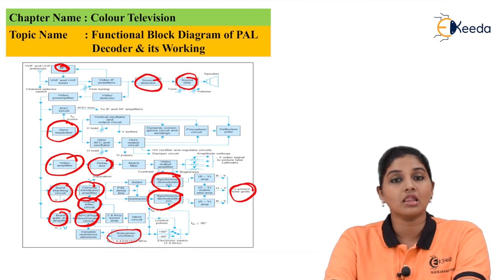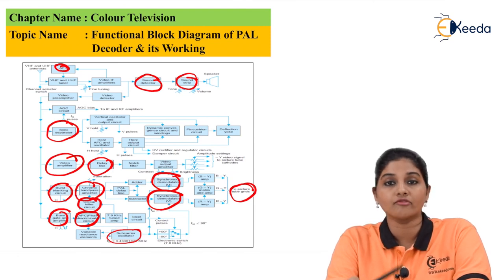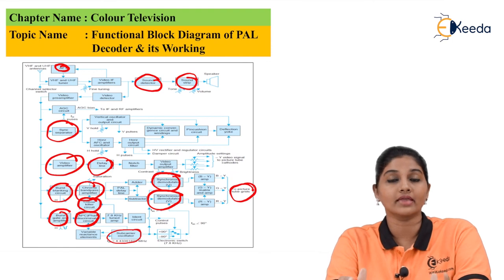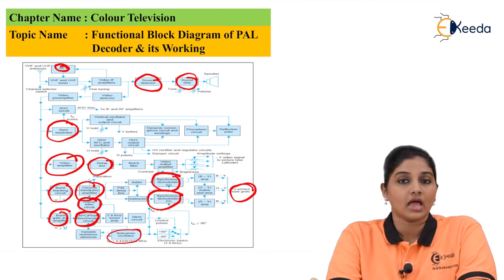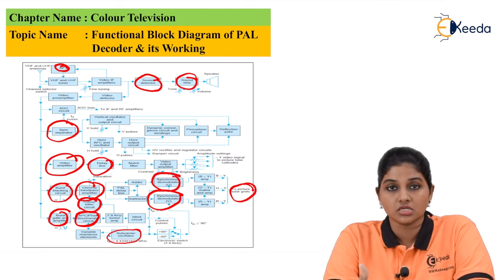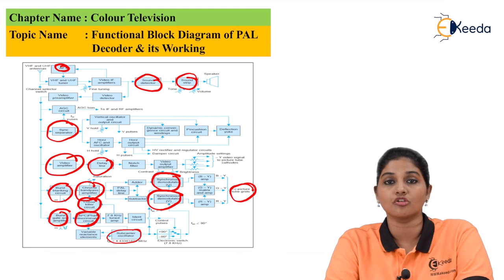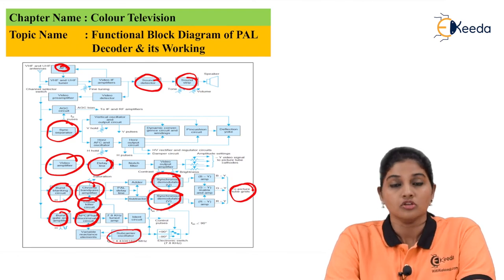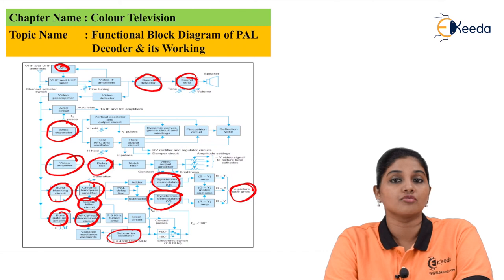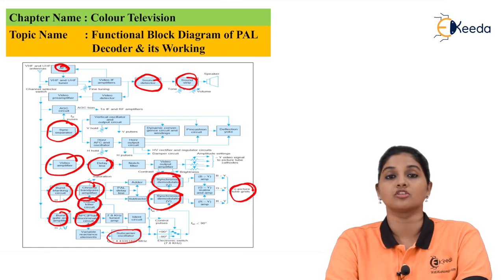The PAL system provides a high number of scanning lines for accurate and detailed picture information, a high gamma ratio for high contrast, easy studio mixing, and stabilizes hue — which was a problem in the NTSC system. I hope you understand the topic of block diagram and functional working of the PAL decoder. Thank you very much for watching this video. Stay tuned and subscribe.